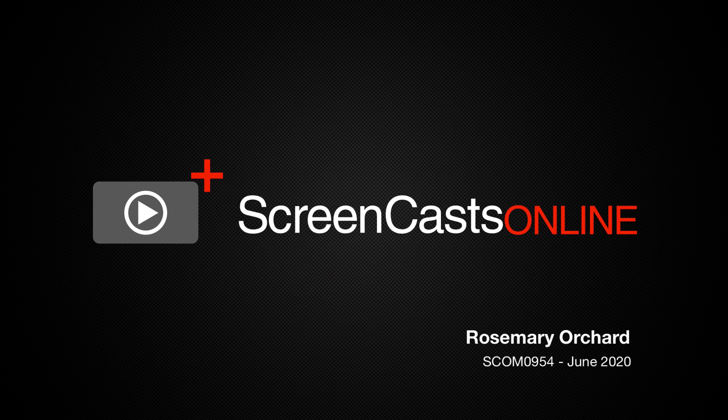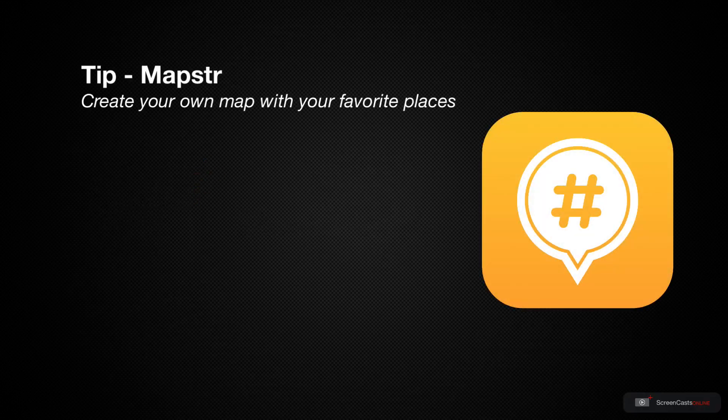Hello and welcome to another edition of ScreenCasts Online. My name is Rosemary Orchard and in today's tip show I'm going to teach you all about Mapstra. Mapstra is a service and iOS application which allows you to put pins on a digital map. These pins can have tags and of course the most important part, a location, allowing you to collect the locations that you want in the way that you want.